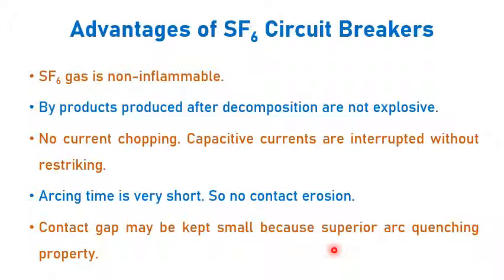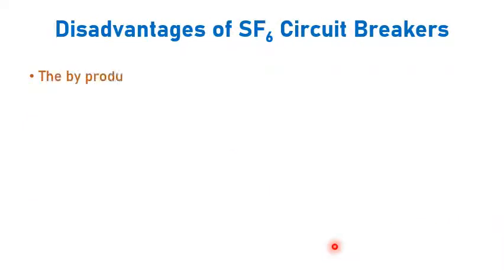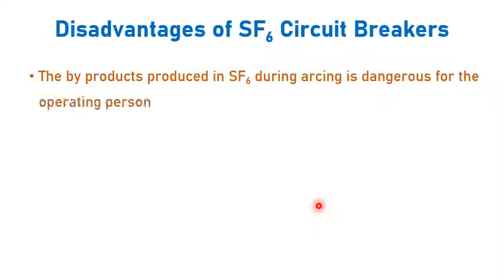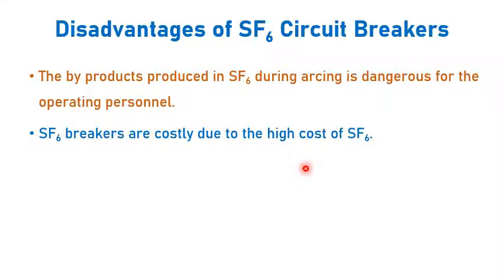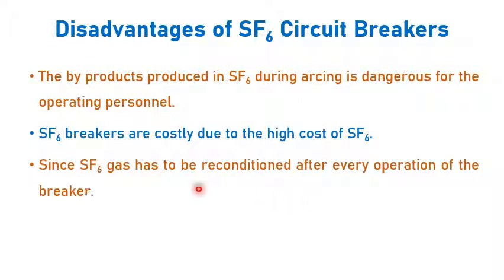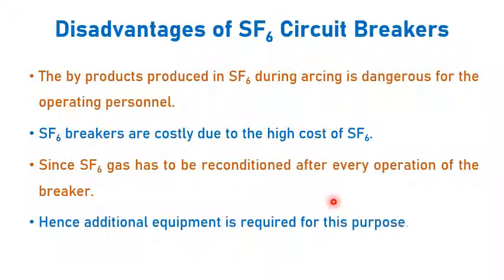Disadvantages: The byproducts produced when SF6 gas is released may be dangerous to operating personnel. Since SF6 gas is costly, the circuit breaker itself becomes costly. Additionally, the gas has to be reconditioned after every operation of the breaker, so additional equipment is required for this purpose. Thank you.